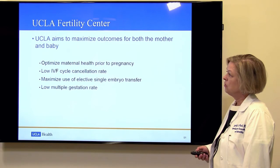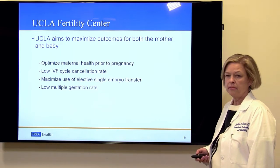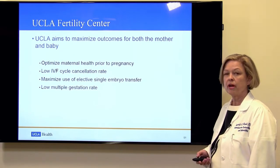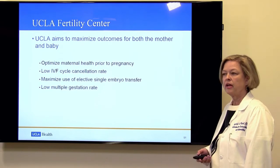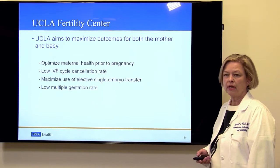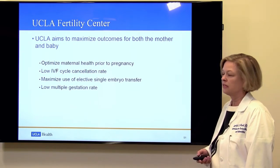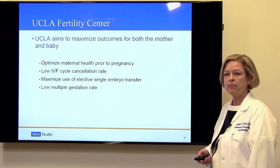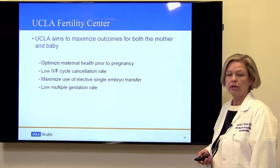At UCLA, we aim to maximize outcomes for both the mother and the baby. That involves optimizing maternal health prior to pregnancy — we ask women to come in when they're considering pregnancy to discuss their history, physical exam, and lab work, and make sure they are in the best possible shape to go ahead and become pregnant. We also focus on low IVF cancellation rates and maximize the use of elective single embryo transfer, meaning we transfer only one embryo at a time to reduce the chance of multiple pregnancy.